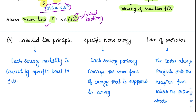Now coming to another set of laws: the labeled line principle, specific nerve energy, and the law of projection. In the central nervous system, there are multiple orders of neurons reaching the brain. If the nerve pathway is stimulated at any point — whether for pain, touch, or anything — the sensation felt in the brain will always be the same, because each sensory modality is carried by a very specific track. This is called the labeled line principle.